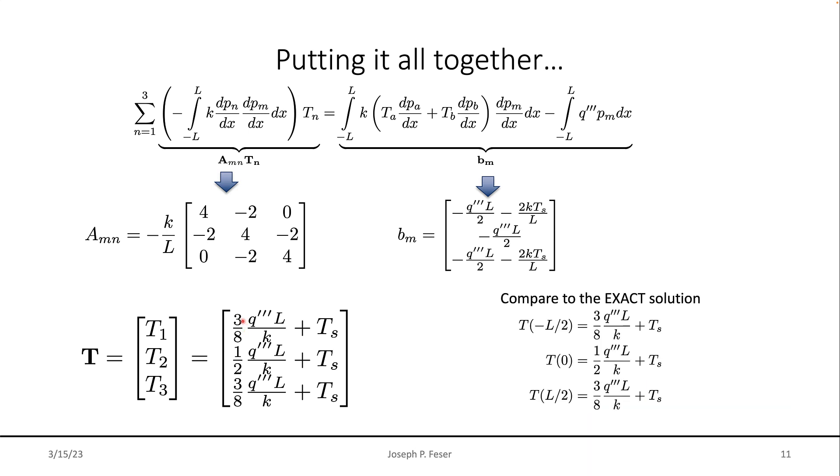Good question. Glad you asked. It turns out it's exactly equal. So the finite element method is able to get the exact solution to the temperature at those nodes. This is actually a very common feature of the finite element method. So if you're using piecewise linear polynomials, it can get the exact solution as long as your solution is parabolic.